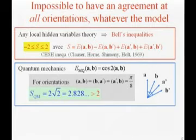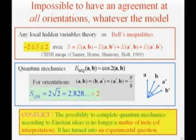which is obviously bigger than two. So this is a proof that you can never have a theory, a local hidden variable theory reproducing this result. Because any local hidden variable theory is constrained by this inequality. And here you have an example where quantum mechanics predicts more than two. So there is no local hidden variable theory able to reproduce this prediction of quantum mechanics. So now, the possibility to complete quantum mechanics according to Einstein's ideas is no longer a matter of taste. It has turned into an experimental question.